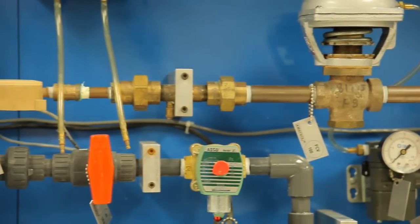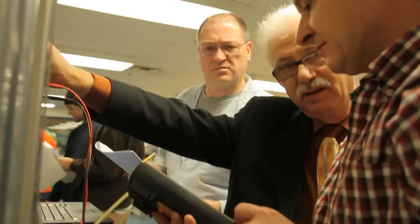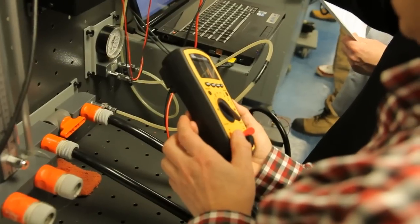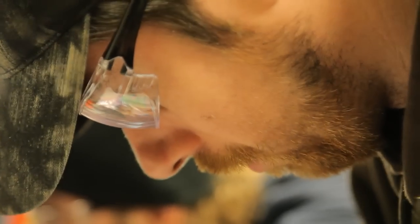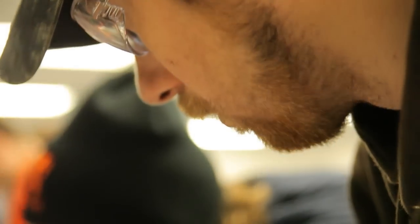This is a lab section of the course, and today we are doing a lab exercise 2.1, which is pressure instrumentation. The students are hooking up pressure instruments, taking readings from them, and generally getting familiar with how pressure instruments work.